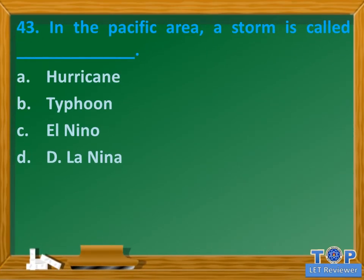Question number 43. In the Pacific area, a storm is called blank. A. Hurricane. B. Typhoon. C. El Nino. D. La Nina.